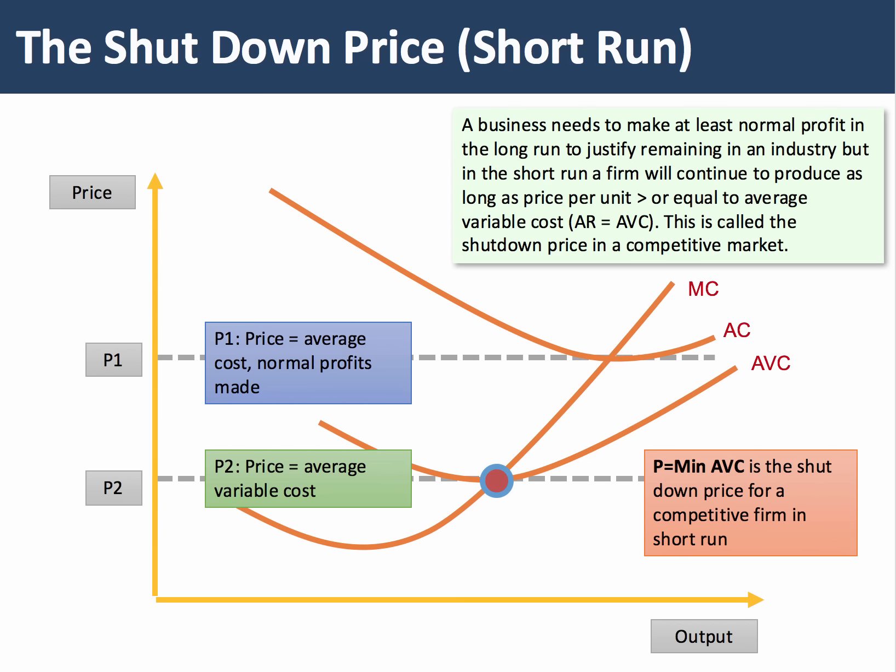Finally, the shutdown price is a short-run concept asking when a business will close down production. In the long run, a business needs to make at least normal profit to stay in the industry. However, in the short run, a firm will continue to produce as long as the unit price is greater than the average variable cost. The minimum of the average variable cost curve shown in our diagram at price P2 is the shutdown price — below P2, firms are better off closing down production.